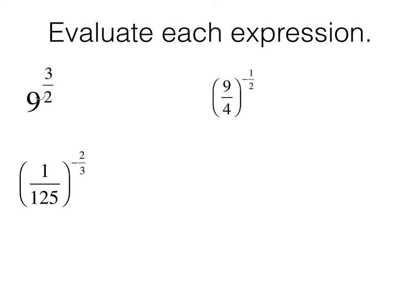So this denominator means I'm taking the square root of 9. And whatever that is, I'm going to raise it to the third power. So the square root of 9 is 3. Raised to the third power will give me 27.